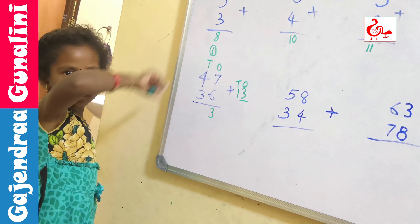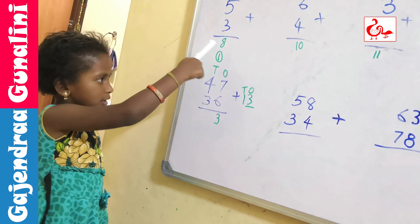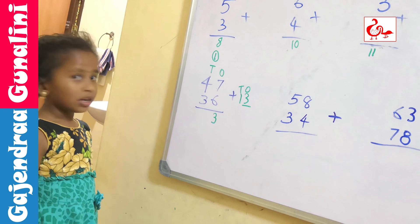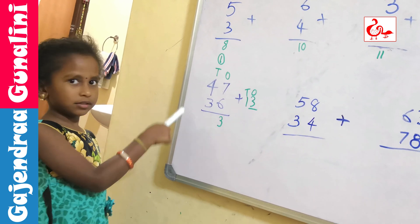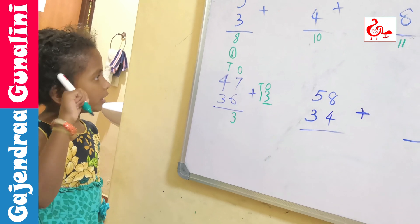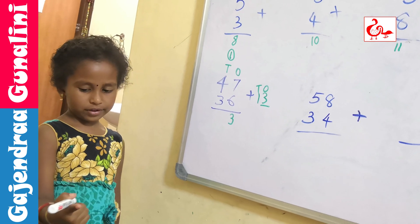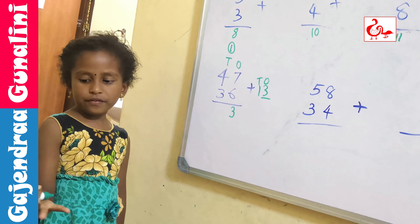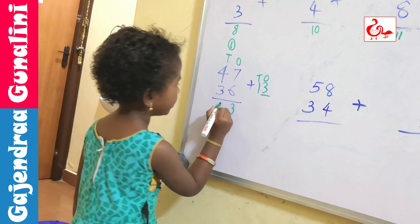We should write this three also. First we should add these two. After these two, whichever answer comes, we should keep in the mind, and this we should keep in the finger. 4 in the mind, 1 in the finger. 4 after: 5. 5 in the mind, 3 in the finger. 5 after: 6, 7, 8. We should write 8.